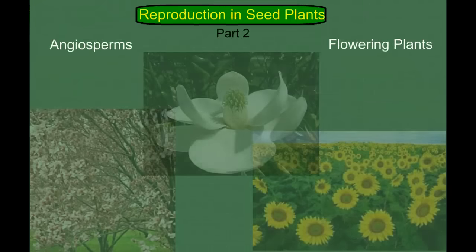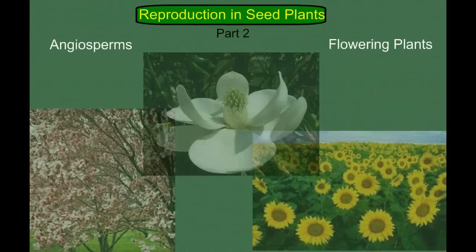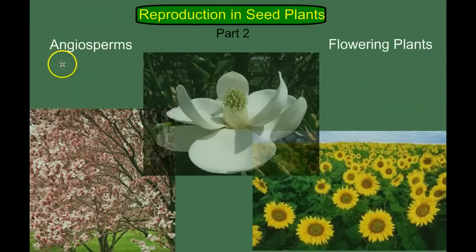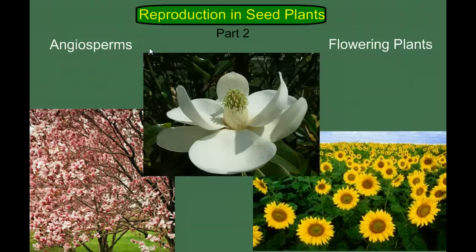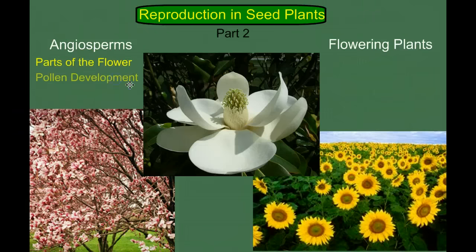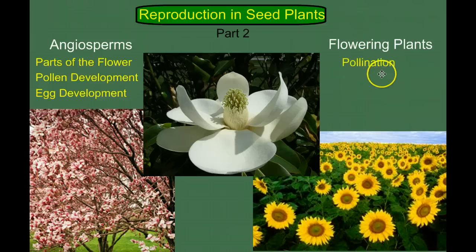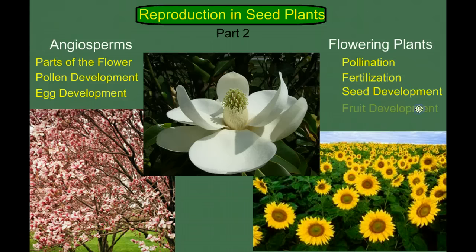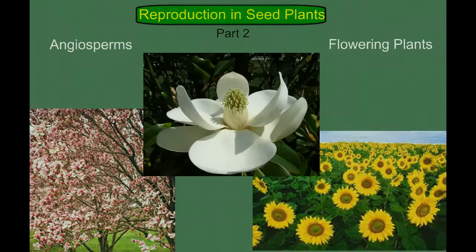Welcome back to our series on plant diversity and evolution. This is part two in our section on reproduction in seed plants. We'll look at the angiosperms, the flowering plants. In this video we'll look at the parts of the flower, pollen development, egg development, pollination, fertilization, seed development, and finally fruit development. So let's get to it.